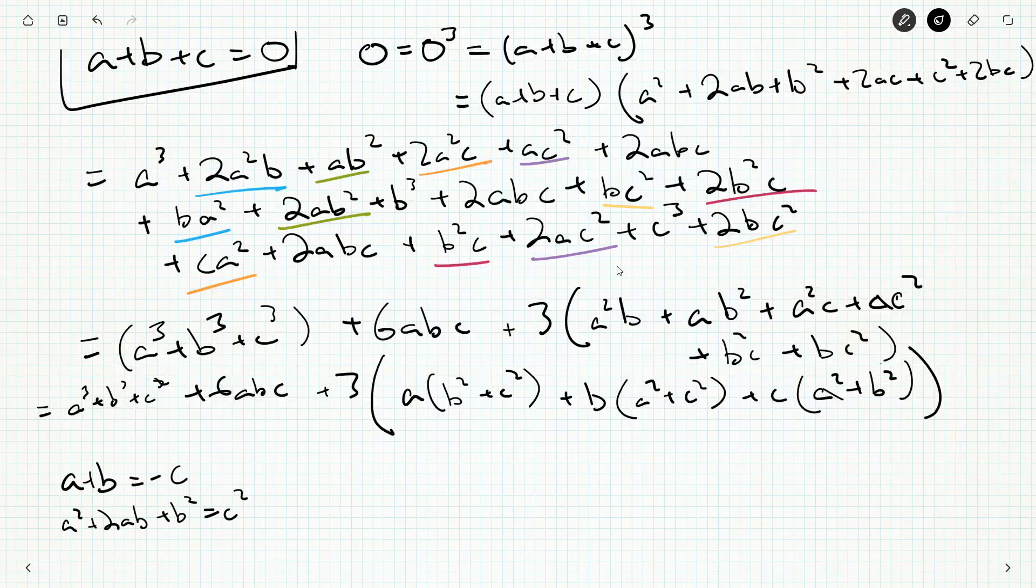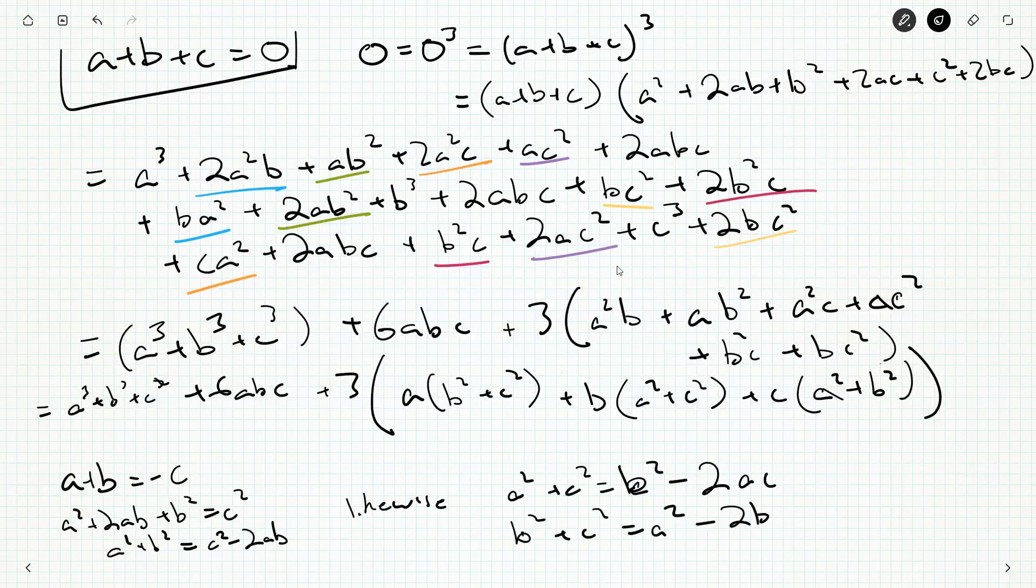So, if I were then to square that, I'd get a squared plus 2ab plus b squared is equal to c squared. So, then I could do something to the effect of, so I've got an a plus b, or a squared plus b squared here. I could then say a squared plus b squared is c squared minus 2ab. And likewise, I can do the same thing. So, likewise, a squared plus c squared is b squared minus the two other ones, 2ac. And b squared plus c squared is a squared minus 2bc.